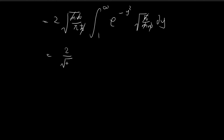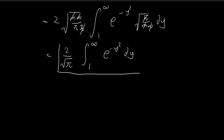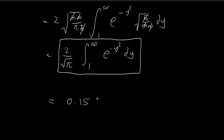We now have a nice integral from one to infinity of e to the power of negative y squared dy. At this point you can't solve this further by hand — you need to look up a table for this integral. Once you look up the value, the final result comes out to approximately 0.157.